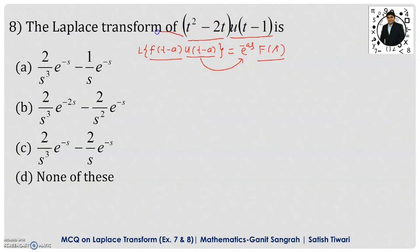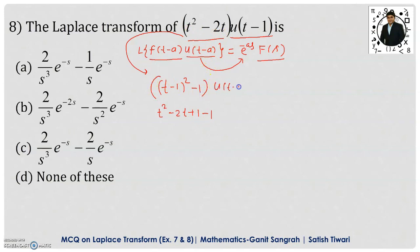So we rewrite t² − 2t as (t − 1)² − 1. We can verify this: expanding (t − 1)² gives t² − 2t + 1, and subtracting 1 gives t² − 2t. So the expression becomes [(t − 1)² − 1] · u(t − 1), which is now in the required (t − a) form.